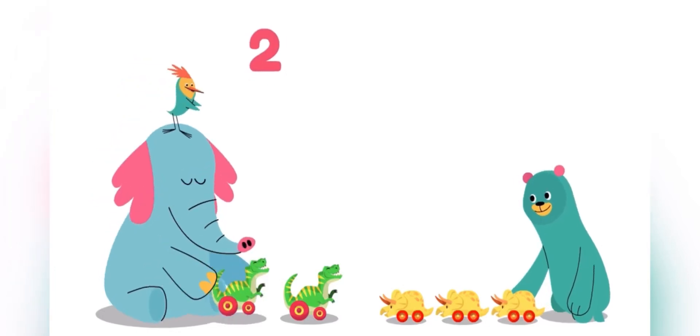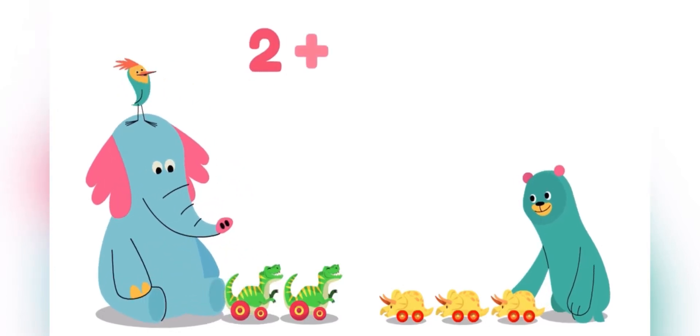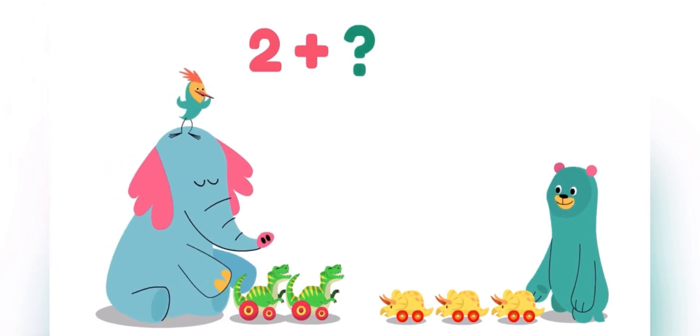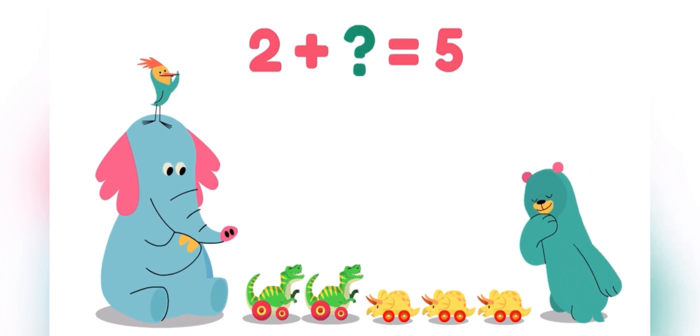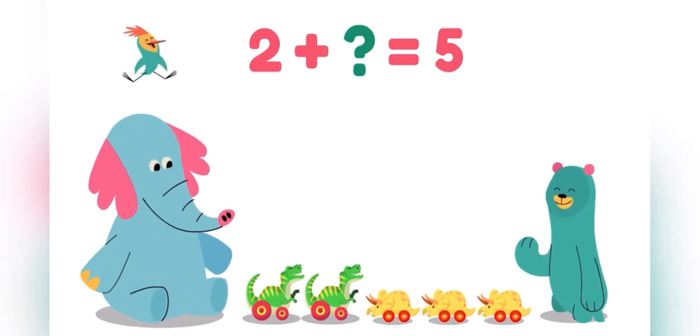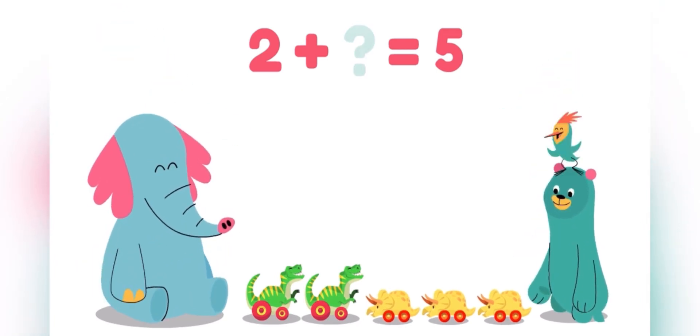Ollo has two dinosaurs. He puts his toys with Cody's toys, and together they have five toy dinosaurs. So, how many dinosaurs does Cody have? If we add two and three, we get five. So, Cody has three toy dinosaurs.